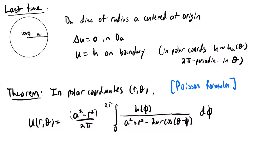The first thing we want to do today is discuss: it's great to have a solution in terms of polar coordinates, but for some purposes it's better to use x and y coordinates, or Cartesian coordinates. The question is, now that we have this formula, is there a nice way to interpret this formula in terms of Cartesian coordinates or x and y coordinates?